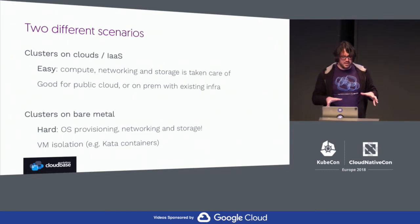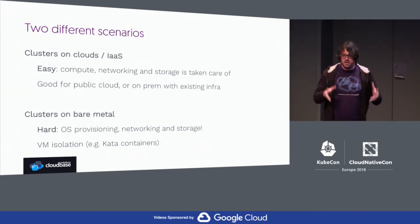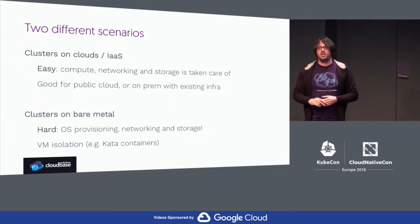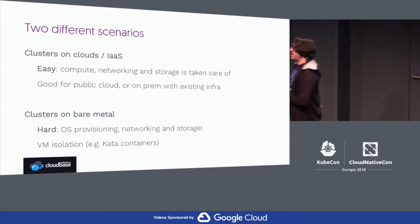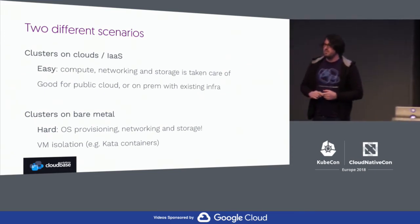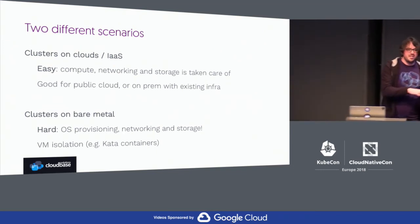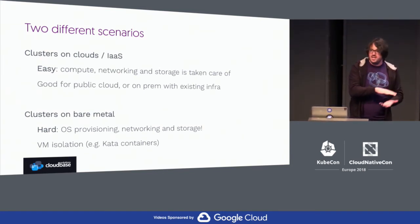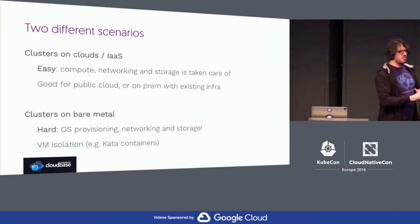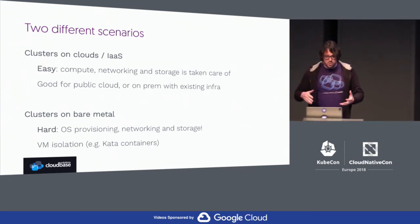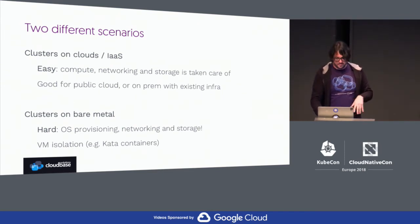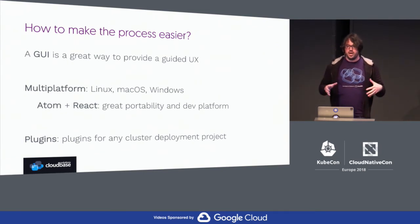So we decided to take a completely different approach. To begin with, you have two main scenarios: you can deploy a Kubernetes cluster in a cloud, meaning somebody's already doing all the hard work for you. Being part of the OpenStack community, we know how hard it is to spin up an infrastructure cloud. When people say Kubernetes is easier than OpenStack, they're comparing apples and oranges — Kubernetes sits on top of something already created by somebody else. On bare metal, you have to do everything yourself. So how to make the process easier? We decided to create a GUI.